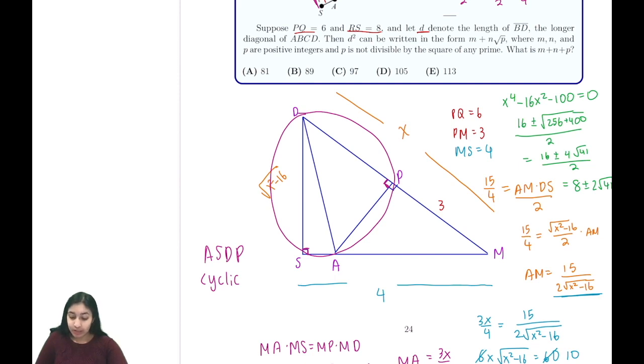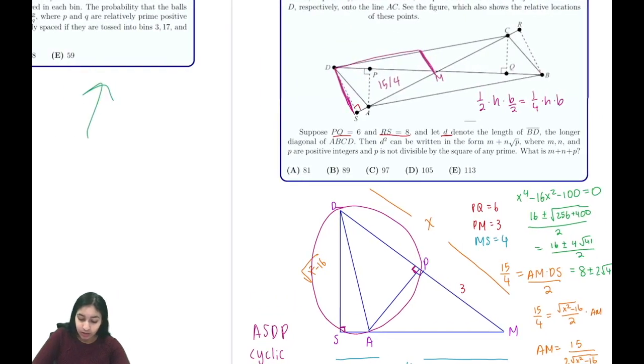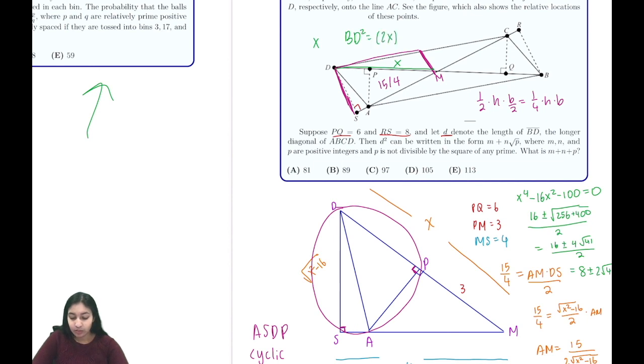From here the problem is straightforward. We know x was our length DM, and we're trying to find BD squared, which is 2x all squared, so 4x squared. We take our expression and multiply by 4, giving us 32 plus 8 root 41. The answer asks for the sum m plus n plus p, which is 32 plus 8 plus 41 equals 81, option choice A.